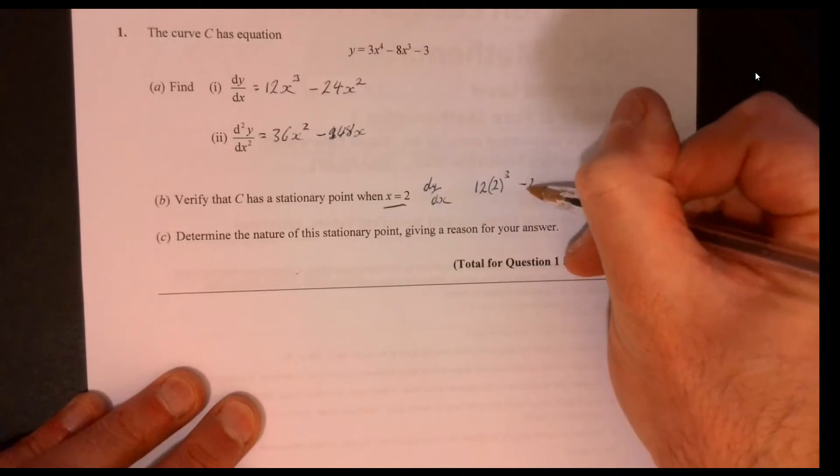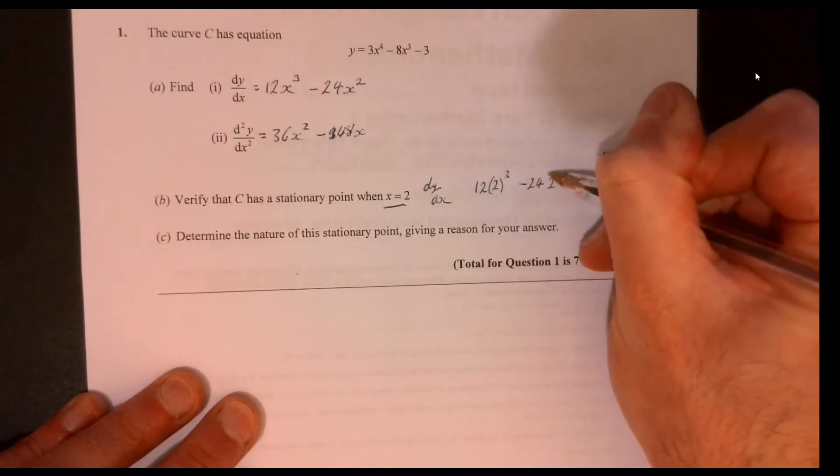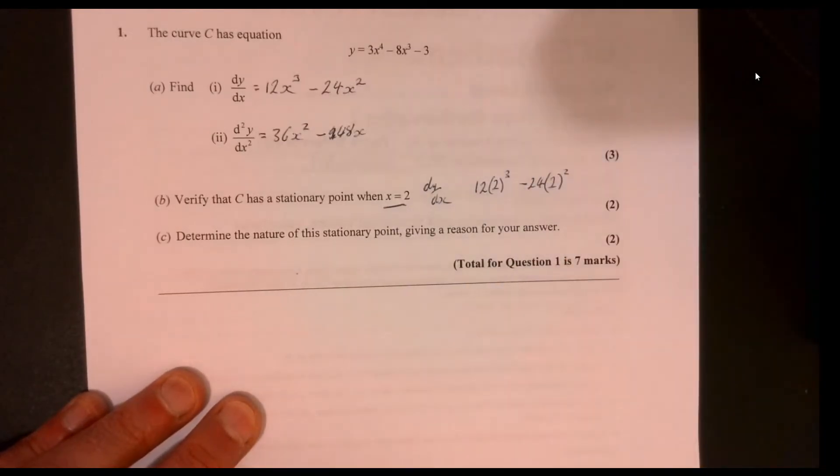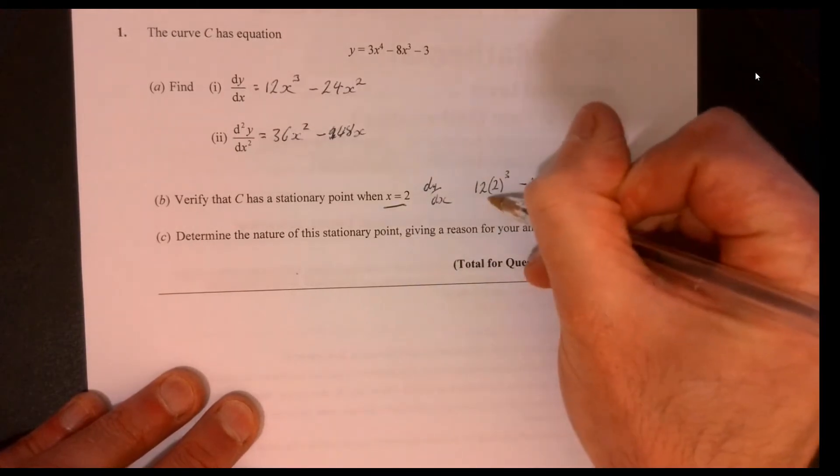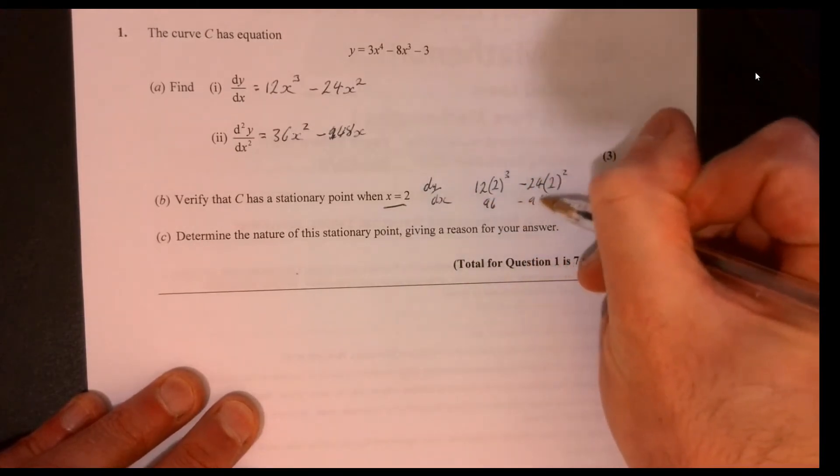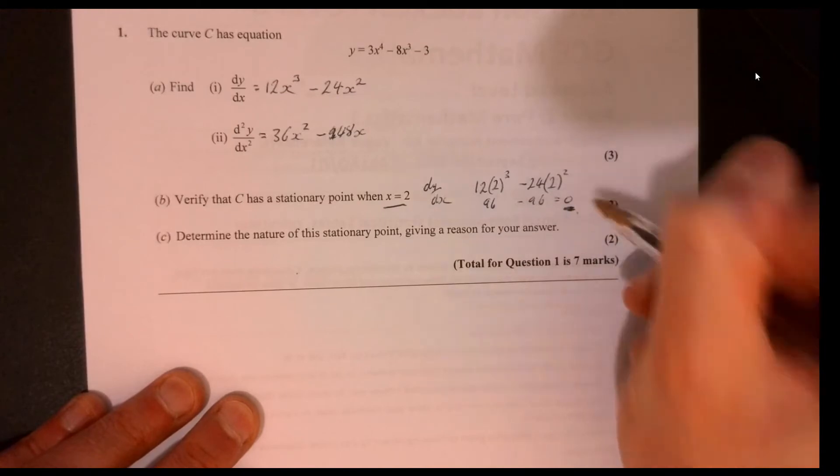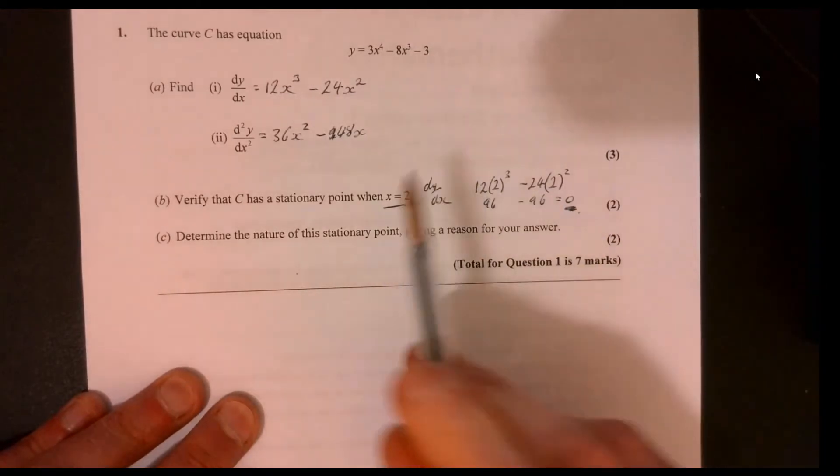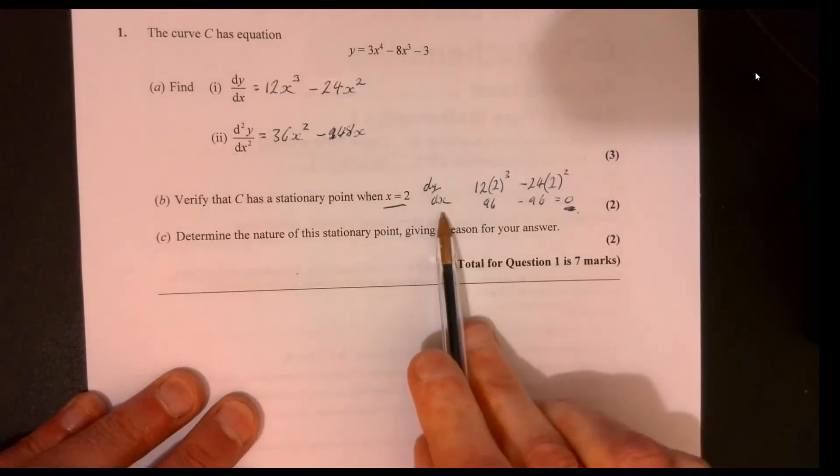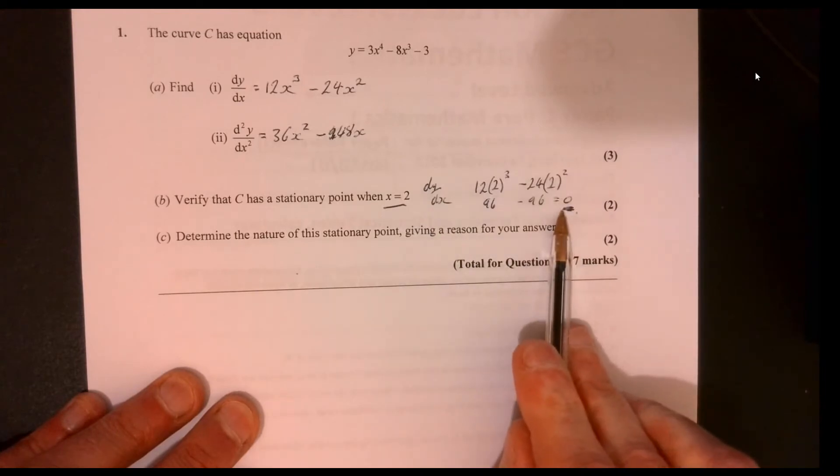take away 24, 2 squared. And if you work that out, 96 take away 96 equals 0. So dy over dx is equal to 0, so therefore you have a stationary point.